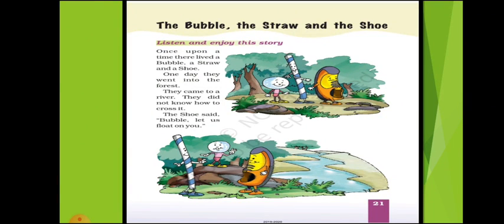Once upon a time there lived a bubble, a straw, and a shoe. One day they went into the forest — forest means jungle. They came to a river and they did not know how to cross it.